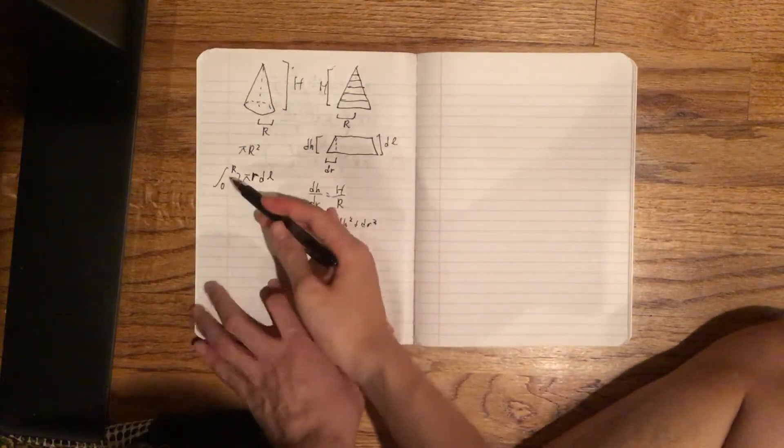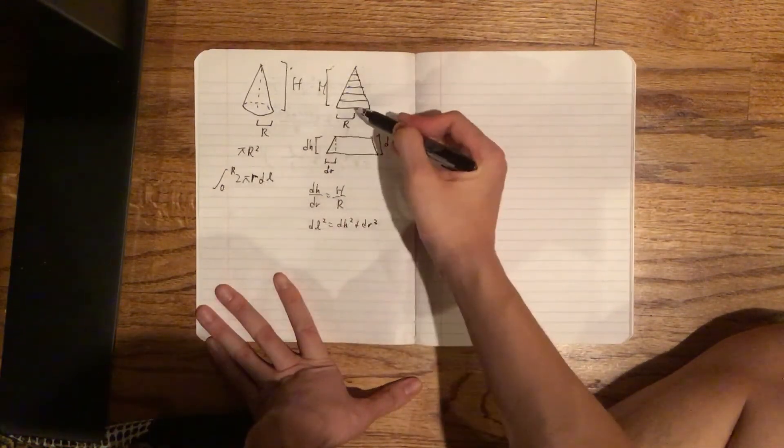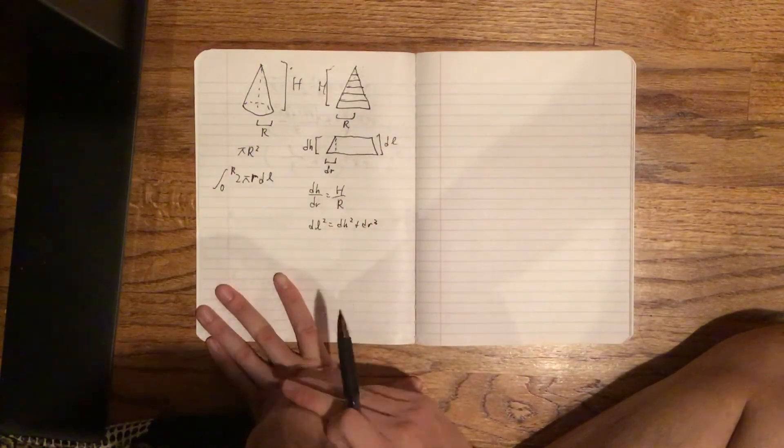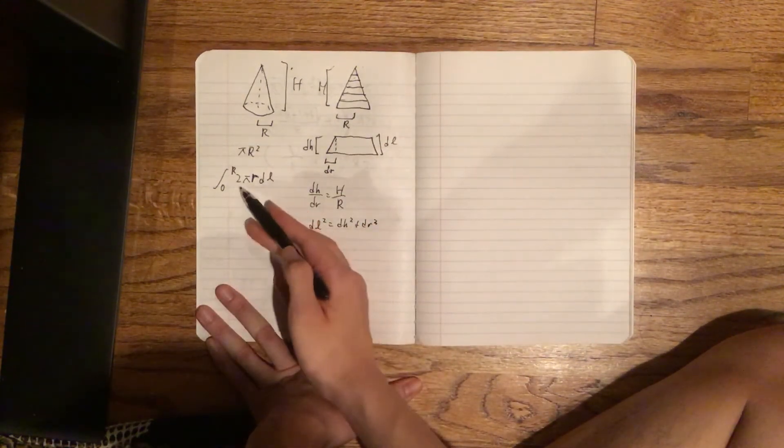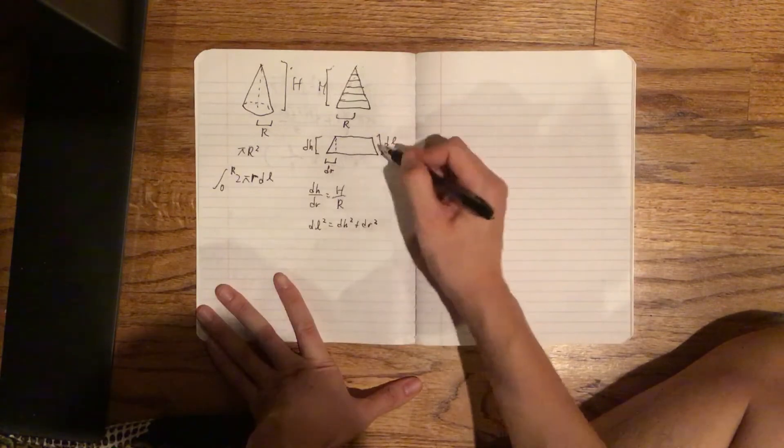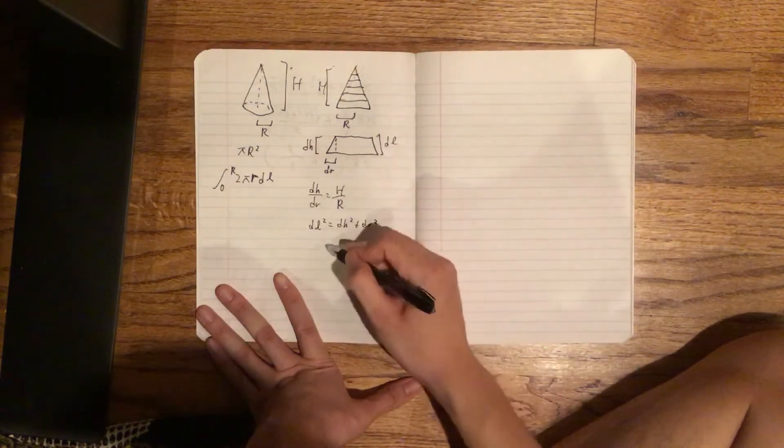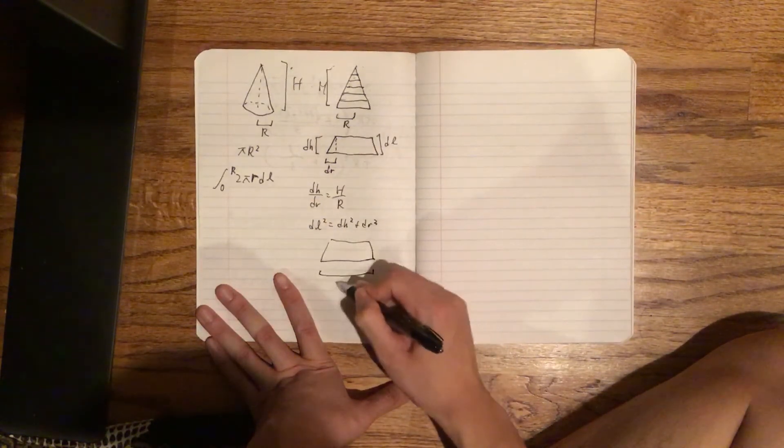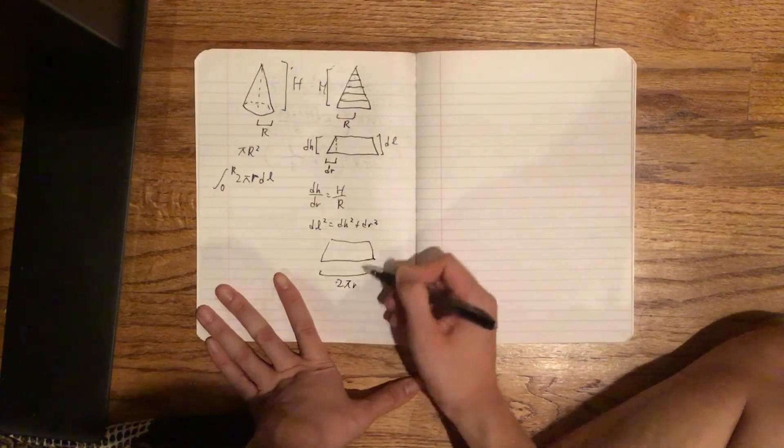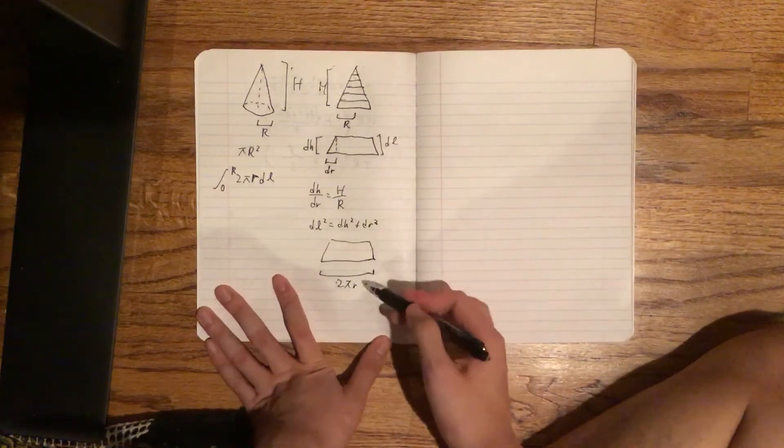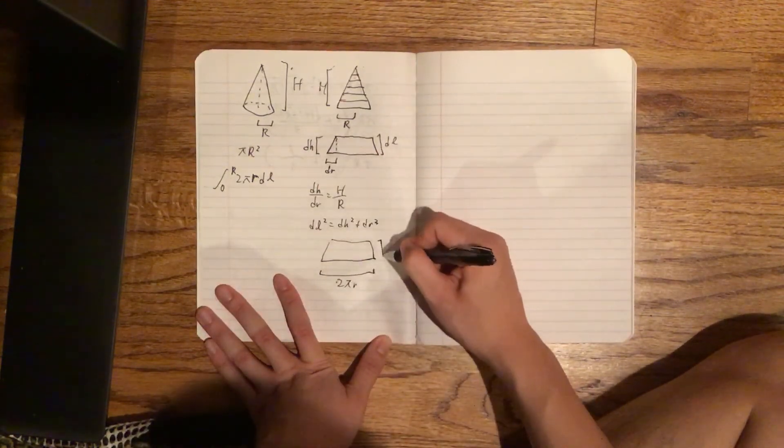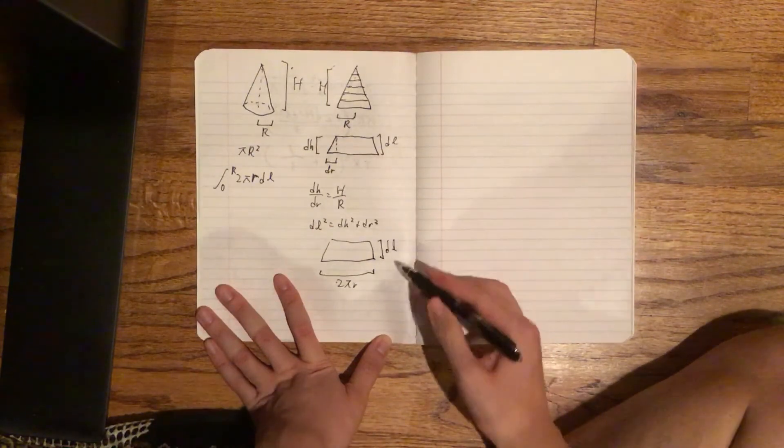Let me first explain what's going on here. 2πr represents the circumference of this piece of cone we've taken here. What is dl? It represents the slant height. So dl is kind of like the height.